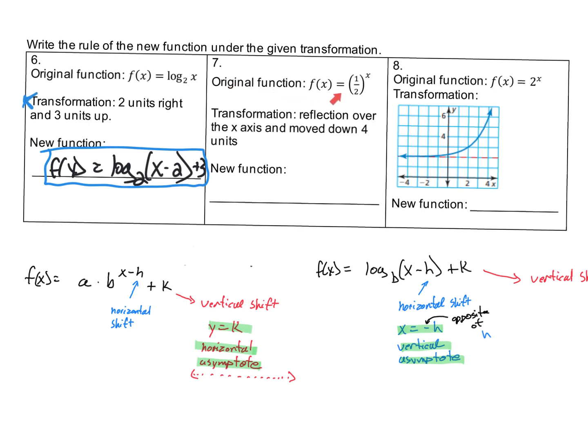Problem 7: the original function f(x) = (1/2)^x. This is an exponential function. The transformation is that it reflects over the x-axis and moves down 4 units.